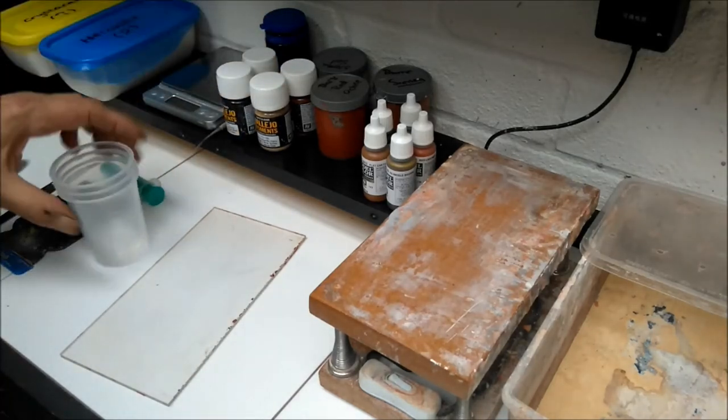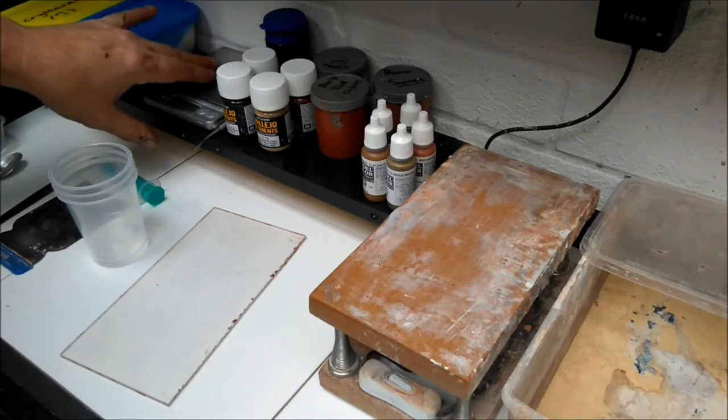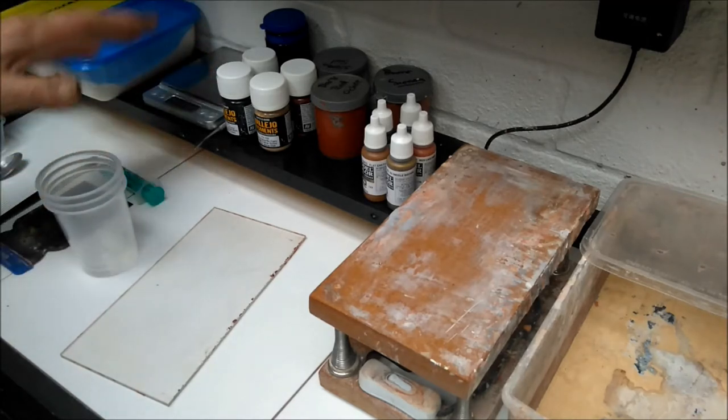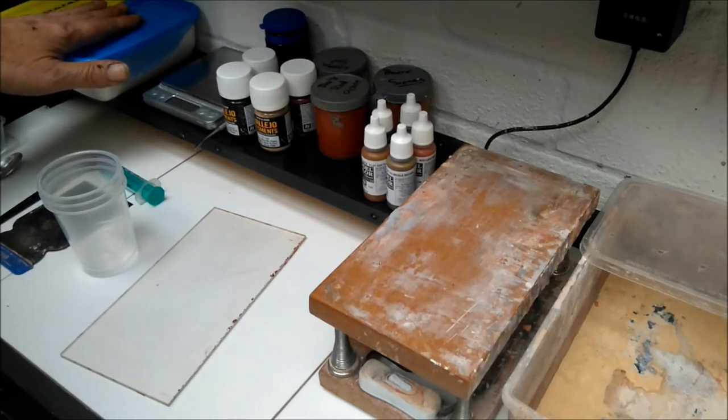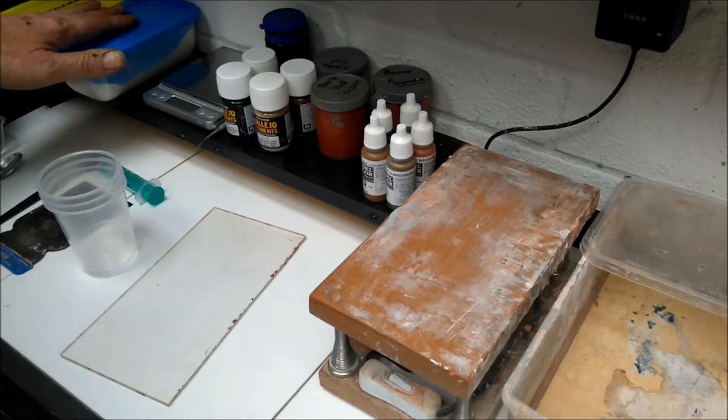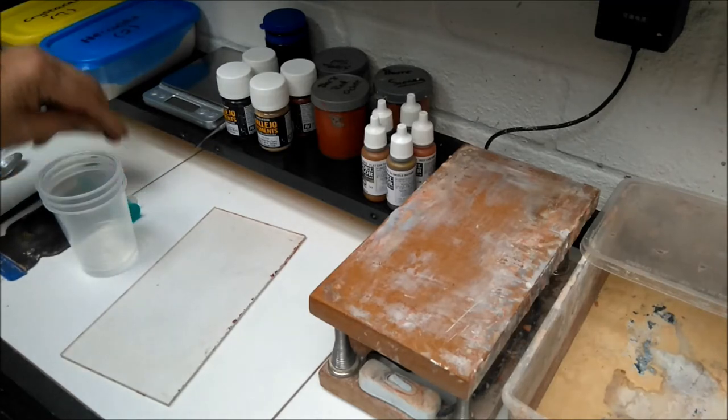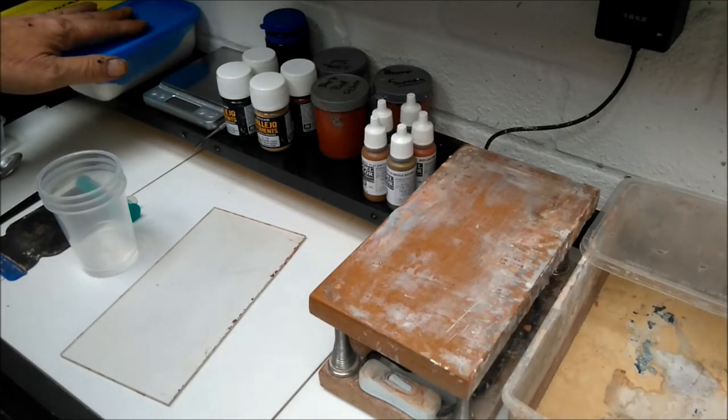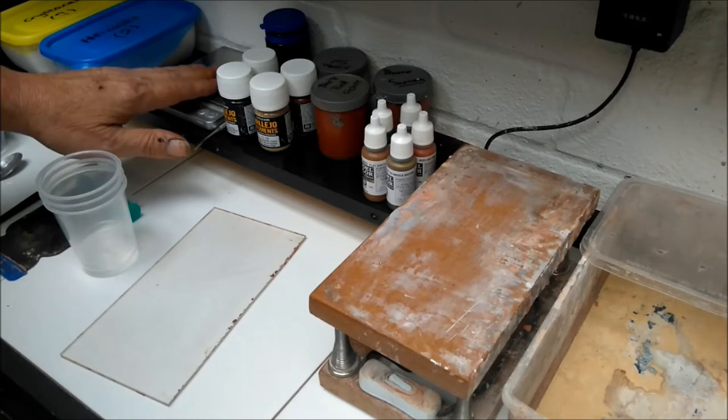Moving along, we have a set of digital scales. The digital scales are for measuring your casting powder by weight. All casting powders come with either a two-to-one or three-to-one ratio, which is one milliliter of water to two grams of casting powder. You need scales to measure that out accurately.